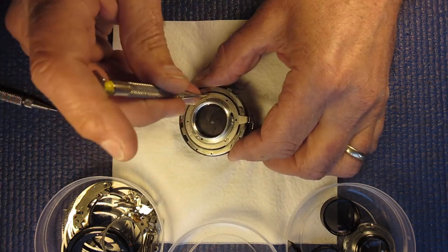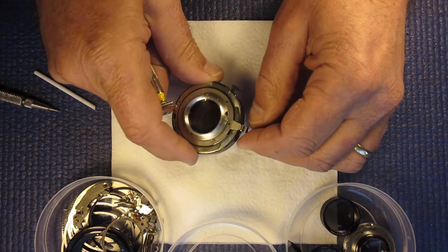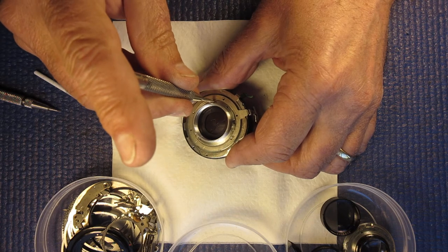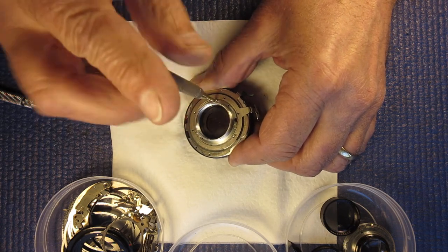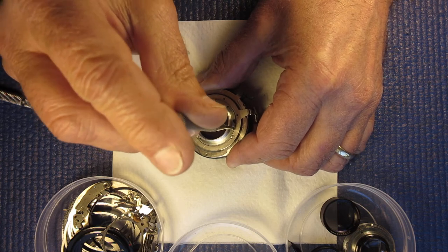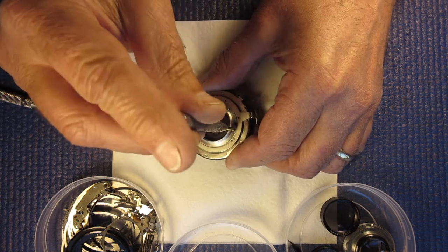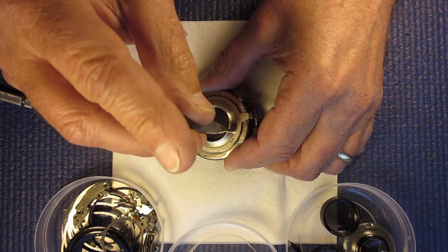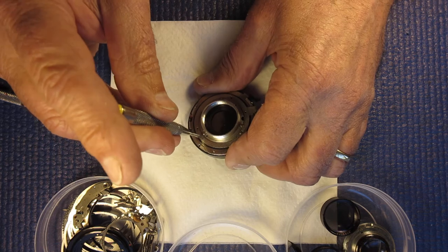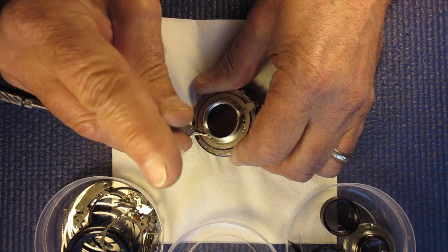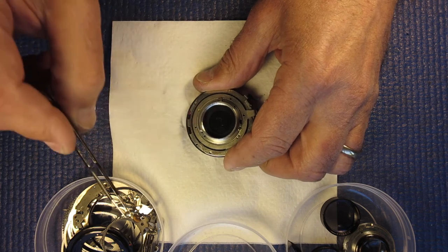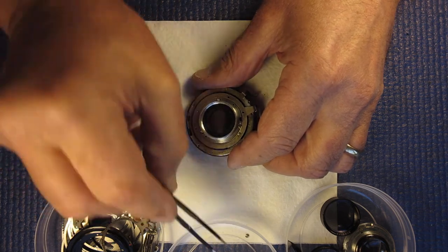We have three screws here which hold this diaphragm setting ring and that screw was loose. Cameras are often a mixture of screws which are too tight and too loose. Much easier to deal with if they're too loose of course.